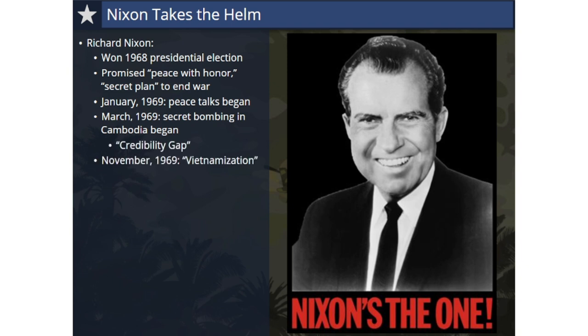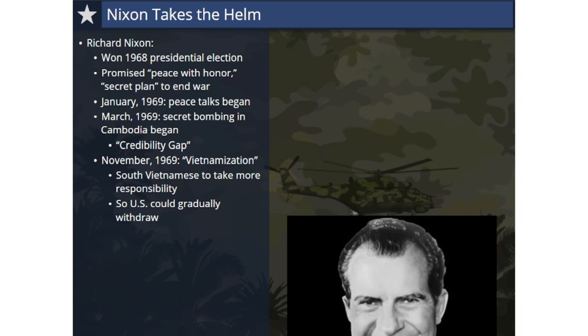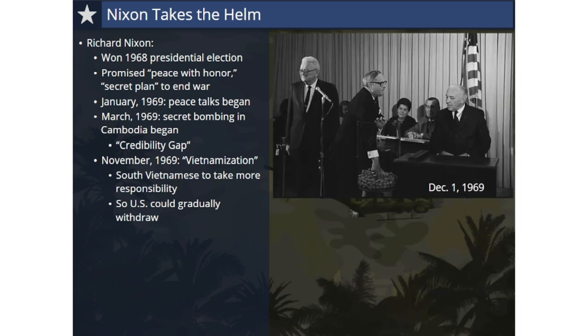In November, Nixon announced his Vietnamization strategy, a policy designed to make the South Vietnamese take more responsibility for fighting the war and enable the U.S. to gradually withdraw its combat troops from Vietnam. Nixon also established a draft lottery system that attempted to eliminate some of the inequities of the previous system. The first draft lottery of the Vietnam War was held on December 1, 1969, and two separate lotteries were held on this date.